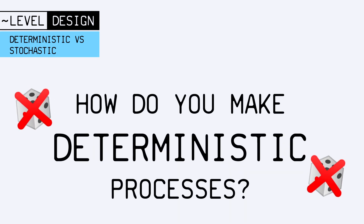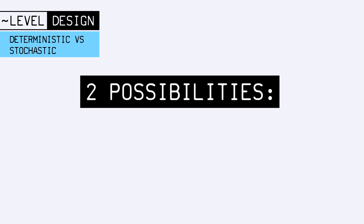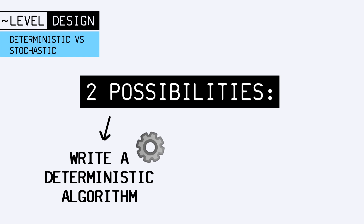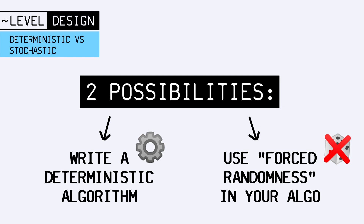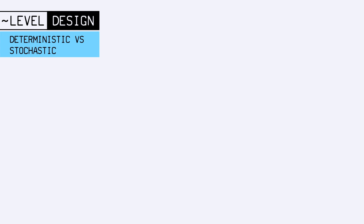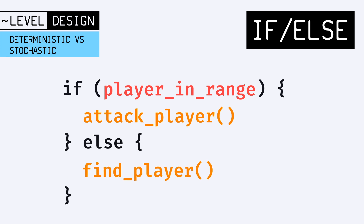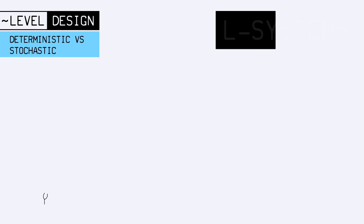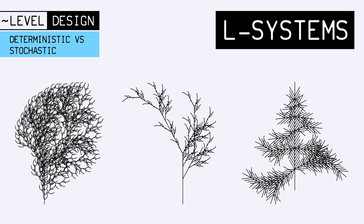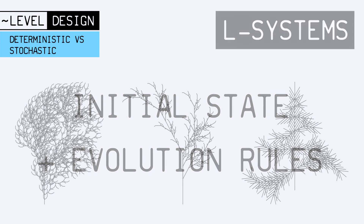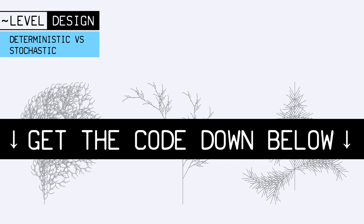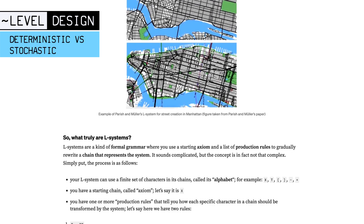Now let's talk about deterministic processes. They basically come in two flavors. Either you write an algorithm with deterministic transitions — meaning that at any step of your process your current state fully specifies the next state — or you use a stochastic algorithm but you force randomness. Some examples of deterministic algorithms include a basic if-else scheme, where you manually determine the state transitions with a fixed logic, or L-systems, which just like the Game of Life use an initial state and evolution rules to create tree or network-like structures. L-systems are often used to make trees or maps in games, and there's a link in the description to a little Python program I made to implement them, as well as an article I wrote on that topic.